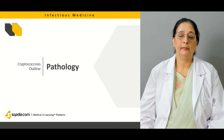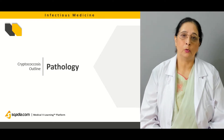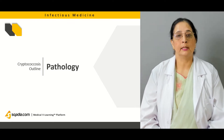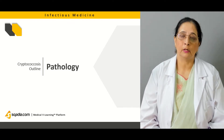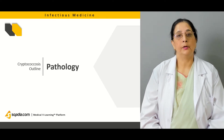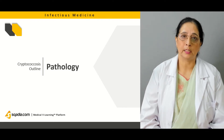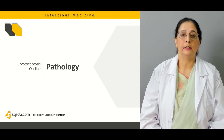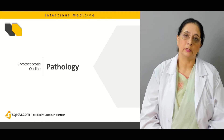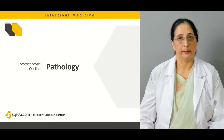Then we will talk about the pathology — we will go over some macroscopic pictures and slides, and then discuss some microscopic slides of cryptococcal infection: how cryptococcus appears in the cerebrospinal fluid, in blood smears, and also in the lung tissues and brain tissues.